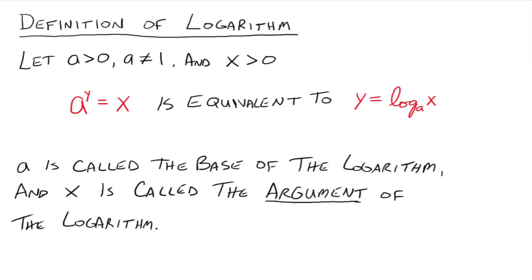So let's start with the definition. We're going to let a be any real number greater than zero except for the number one, and let x be greater than zero as well. If we've got something of this form — a to the y is equal to x — then that's equivalent to writing y equals log base a of x. You read this as 'y equals the log base a of x,' or 'y equals the log of x with base a.'